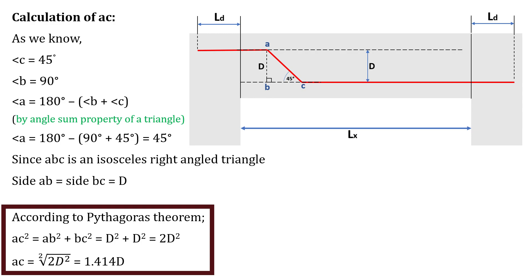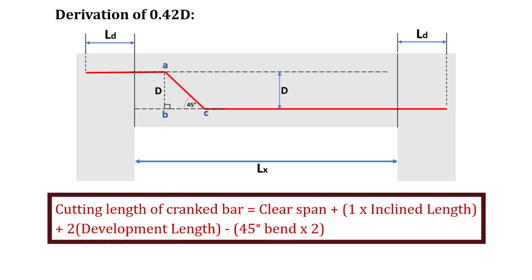Now, let's derive the formula for calculating the inclined length of a bent up bar or cranked bar. The cutting length of a cranked bar can be calculated as the clear span plus 1 times the inclined length plus 2 times the development length minus the 45 degree bend into 2.